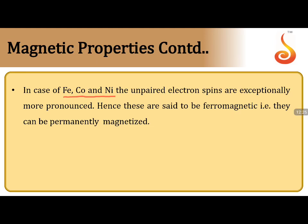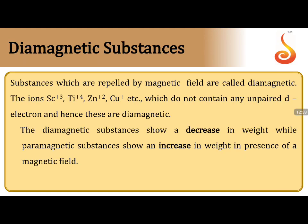Ferromagnetic substances — iron, cobalt, nickel — have permanent magnetism even in the absence of a magnetic field; they show very strong attraction toward external magnetic fields. Examples include Fe, Co, Ni, and CrO₂. Diamagnetic materials are weakly repelled by a magnetic field. Species with d⁰ or d¹⁰ configuration with no unpaired electrons are diamagnetic.